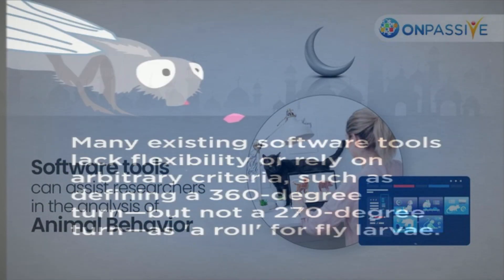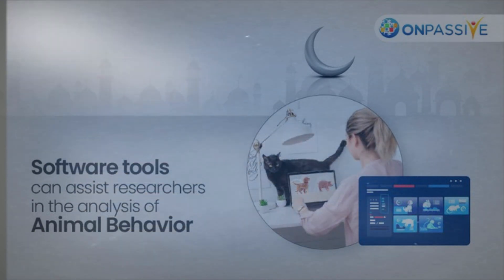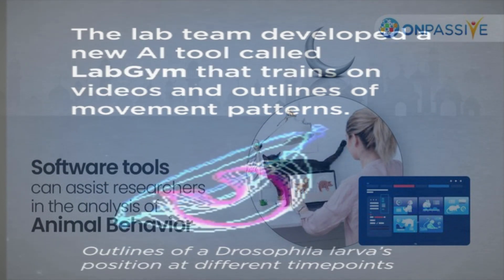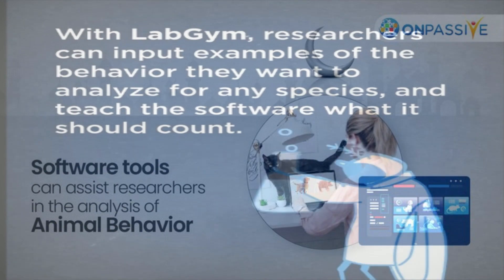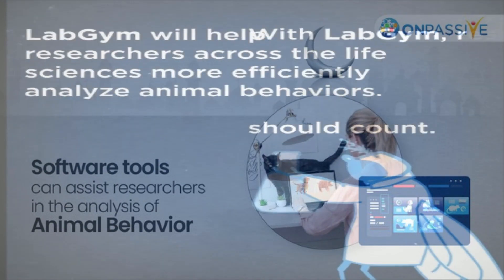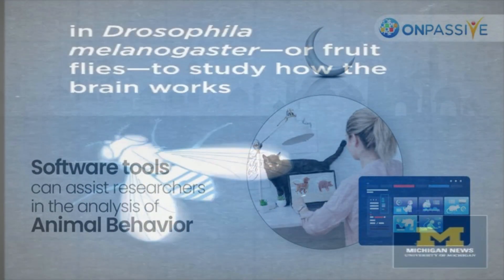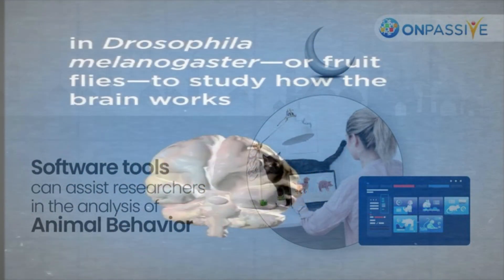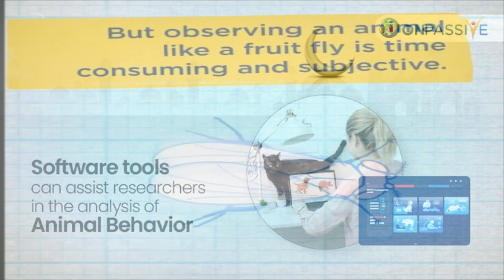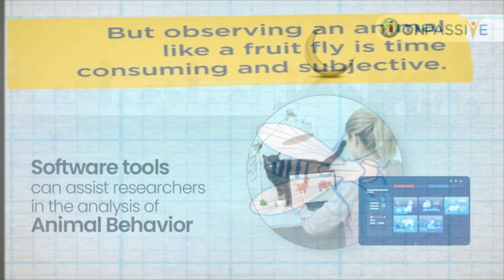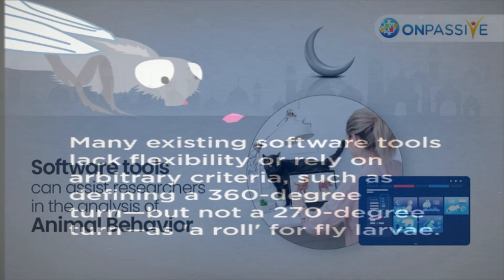Behavior is a brain function. Analyzing animal behavior provides essential information about how the brain works and how it changes in response to disease, said Yujia Hu, a neuroscientist in Yi's lab at the University of Michigan Life Sciences Institute and lead author of a Cell Reports Methods report detailing the new program published on February 24. However, manually recognizing and counting animal actions is time consuming and highly subjective to the researcher assessing the behavior.